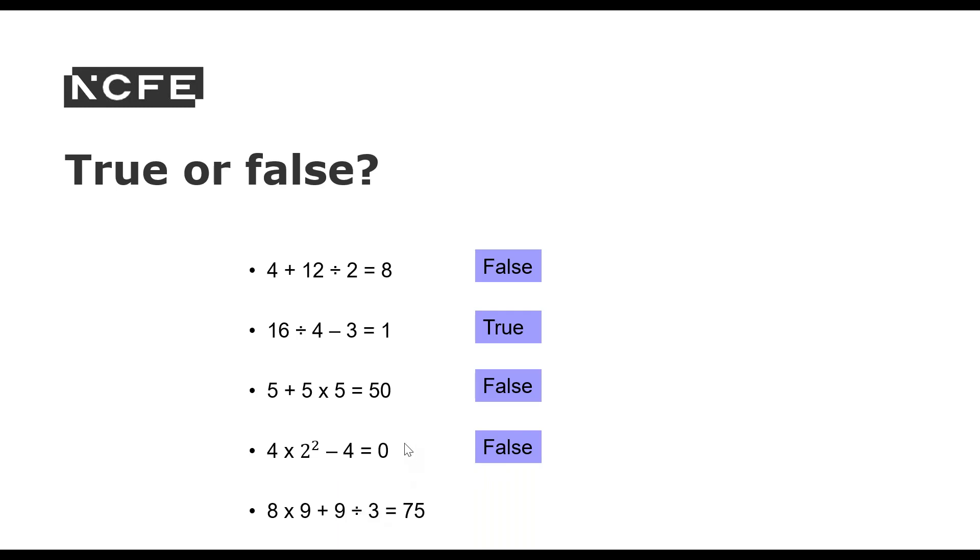How about this last one? 8 times 9 plus 9 divided by 3 equals 75. Is that true or is it false? It's true. So we've got the division first and 9 divided by 3 is 3. 8 times 9 is 72. 72 plus 3 is 75. So it's true.